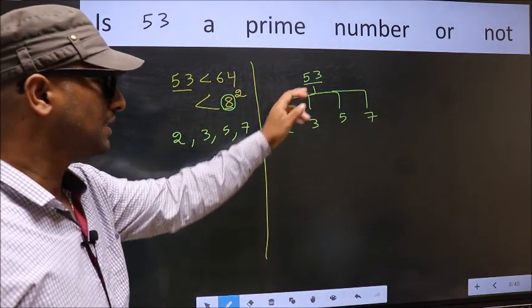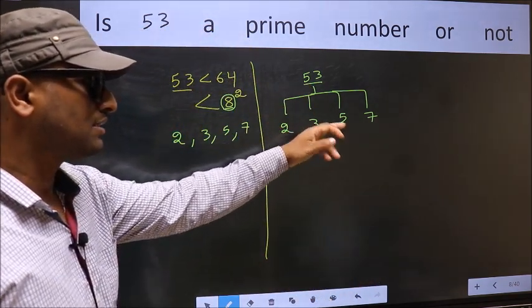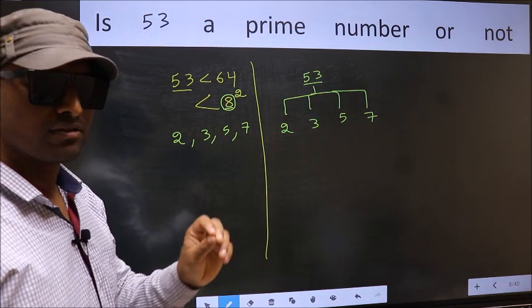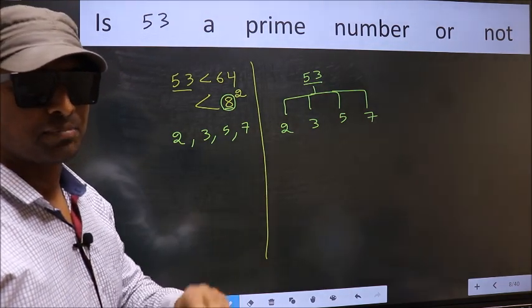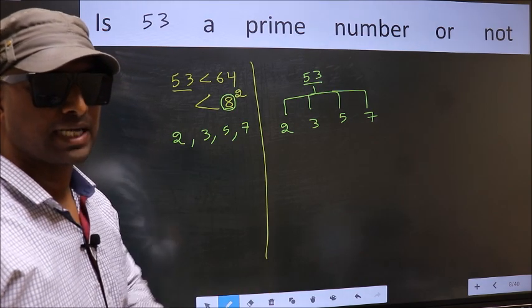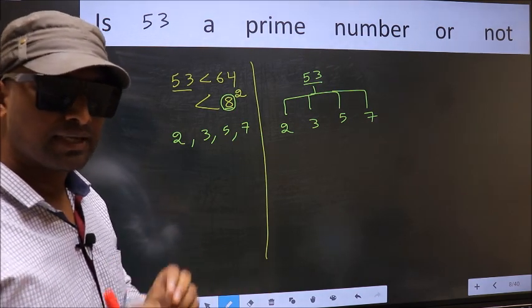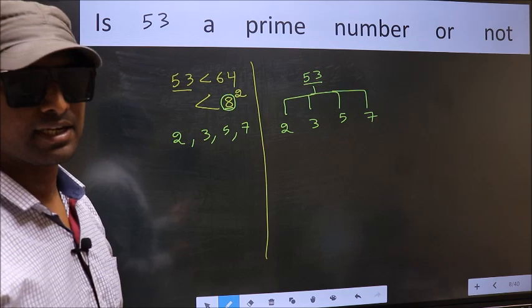If 53 is divisible by any one of these numbers, we say it is not prime. Otherwise, it is prime. Clear with the method. Let us check the divisibility.